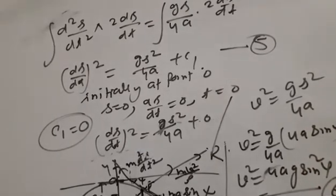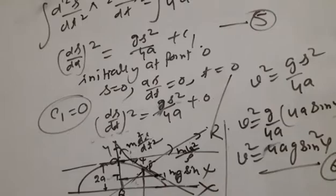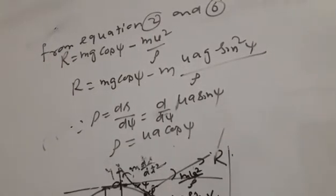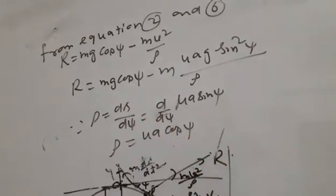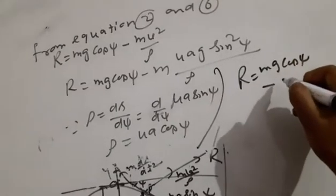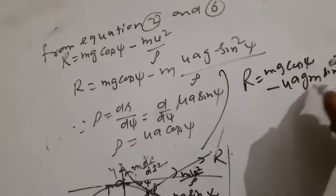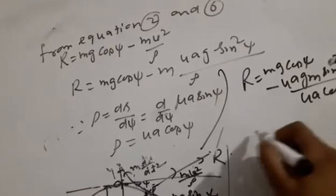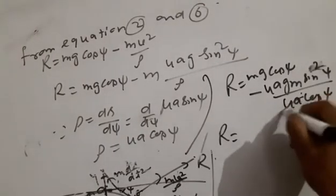Now using equations 2 and 6 together, we find R = mg·cosψ − m·v²/ρ. Substituting v² = g·s²/(4a) and ρ = 4a (for the cycloid), and s = 4a·sinψ, we get R = mg·cosψ − (4a·g·m·sin²ψ)/(4a) = mg(cosψ − sin²ψ).